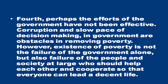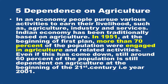The fifth important aspect of Indian economy after independence is the dependence on agriculture. In an economy, people pursue various activities to earn their livelihood such as agriculture, industry, services, etc. Indian economy has been traditionally based on agriculture and is known as an agrarian economy. In 1951, at the beginning of the first plan, more than 70 percent of the population were engaged in agriculture and related activities. Even though this has come down, still around 60 percent of the population was dependent on agriculture at the beginning of the 21st century, in the year 2001.